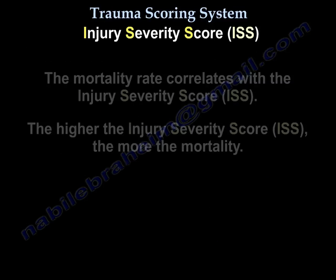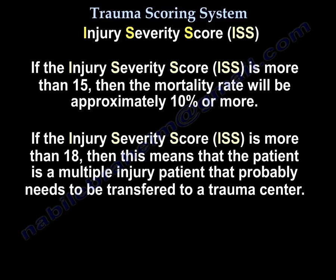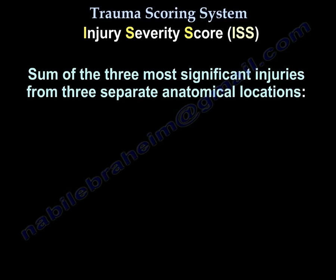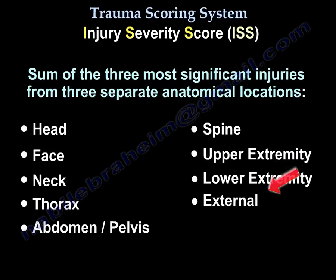The mortality rate correlates with the ISS score — the higher the ISS score, the more the mortality. If the ISS score is more than 15, the mortality will be approximately 10% or more. If the ISS score is more than 18, the patient is a multiply injured patient and probably has to be transferred to a trauma center. The ISS score is the sum of the three most significant injuries in three separate anatomical locations, and we have nine different anatomic regions: the head, the face, the neck, the thorax, the abdomen and pelvis, the spine, the upper extremity, the lower extremity, and external.